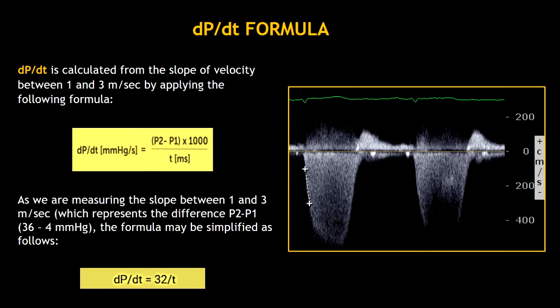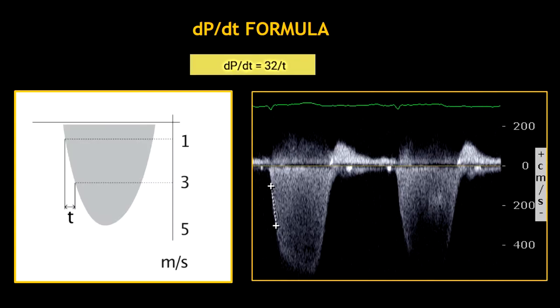Because pressure number 2 is always going to be 36, and pressure number 1 is always going to be 4, we can use this simplified formula: 32 divided by the time. With this simplified formula, it is very easy to obtain the DPDT. We only have to measure the slope between 1 and 3 meters per second, and then divide 32 by the time it takes for the velocity to rise from 1 to 3 meters per second.